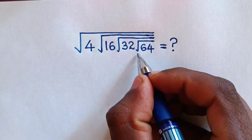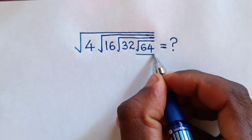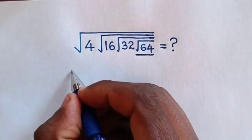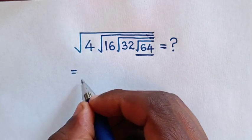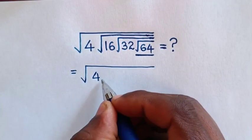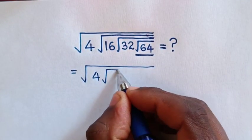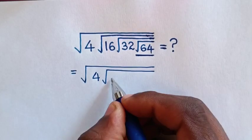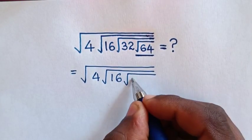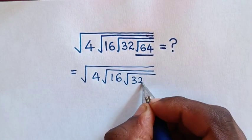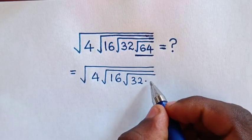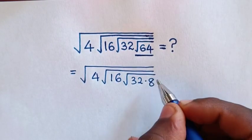So first we start with the square root of 64, which is 8. Then it will be equal to square root of 4 under square root of 16 under square root of 32, then times square root of 64 is 8.